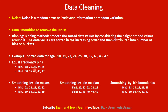In smoothing by bin median, we look at the bin and find the median value. For bin 1, the median is 22. For bin 2, the median is 40. If there is an odd number of data values, find the middlemost data value. All values in each bin are replaced by the bin's median value. This is smoothing by bin median.